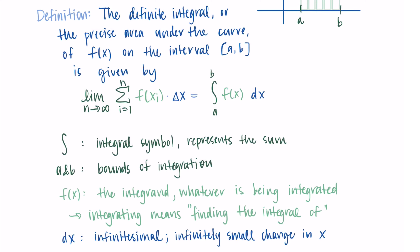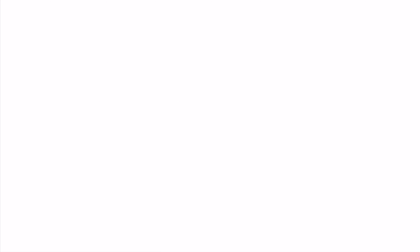The definite integral gives us the precise or exact area between the curve and the horizontal axis. The Riemann sum with a finite number of rectangles could only approximate that area, and we want to do better — we want math that will help us find the exact area. The definite integral is the way we are going to do that. For now, we're just learning the notation and the basic idea of how the integral symbol represents the area under the curve. Let's try an example.